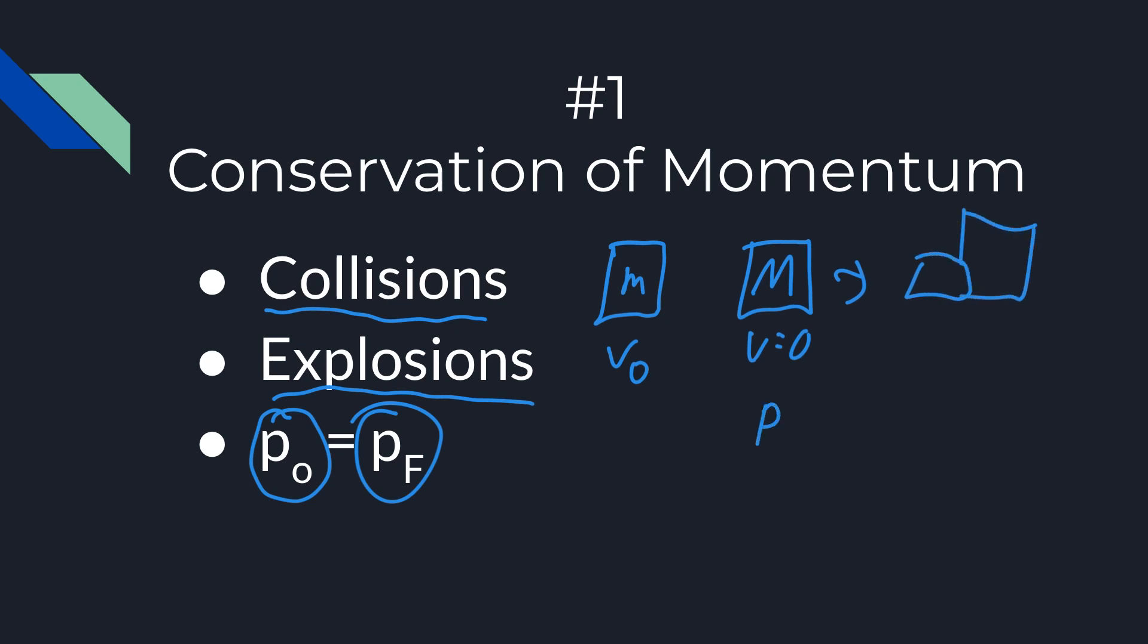So you would just say P initial equals P final, and you'd go MV. That's the initial momentum of this by itself, and then that equals M plus M, because they're stuck together, times the final velocity. So if they asked you to solve for the final velocity, you would just say it's MV over little m plus big M.